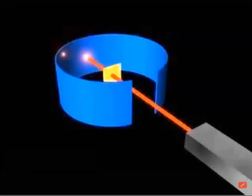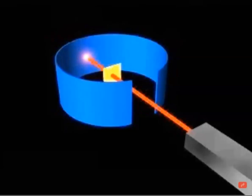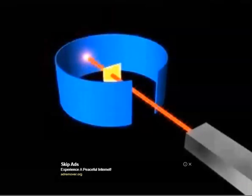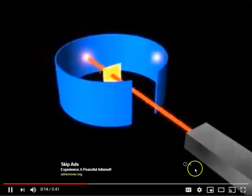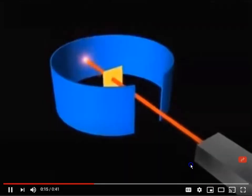In Rutherford scattering, a beam of alpha particles pictured in red is ejected towards a gold foil target surrounded by a circular blue detecting screen. Alpha particles scattered by the gold can be seen as spots of light hitting the detector at different locations.